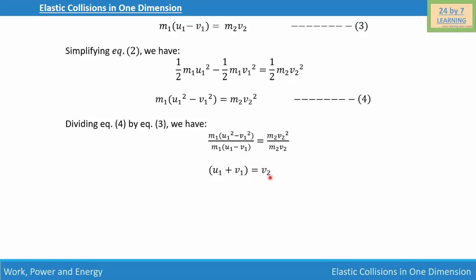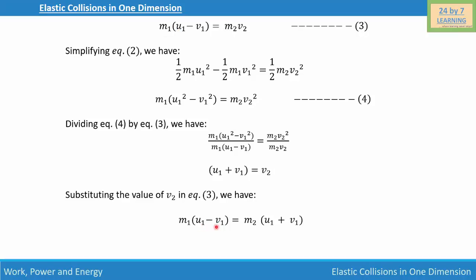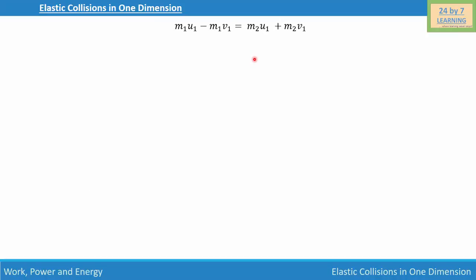Now let's substitute the value of v2 into equation 3. We write m1(u1 − v1) = m2(u1 + v1). Expanding, we get m1·u1 − m1·v1 = m2·u1 + m2·v1. Rearranging to collect v1 terms together: m1·u1 − m2·u1 = m1·v1 + m2·v1.